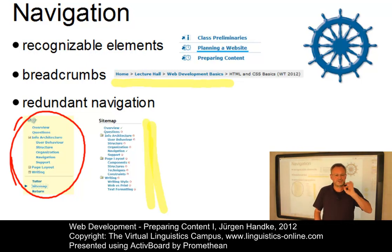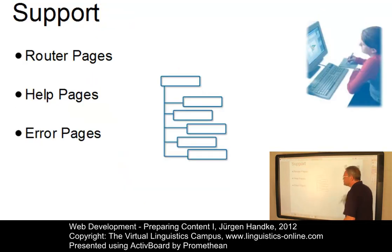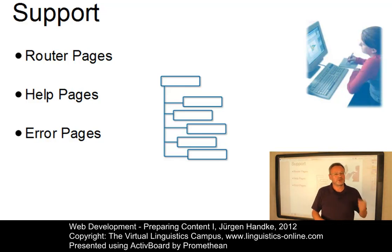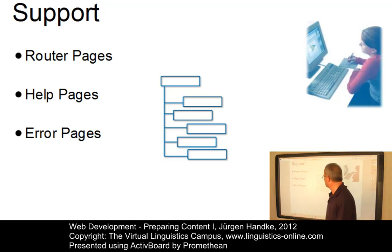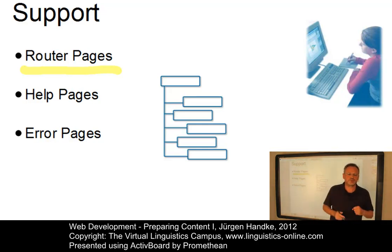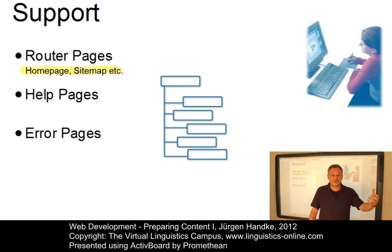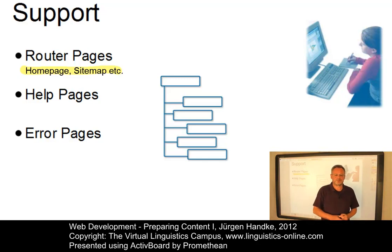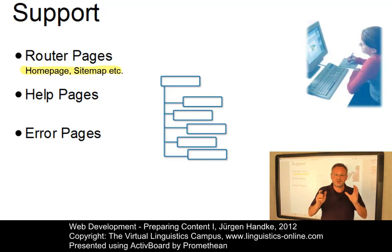After content organization and navigation, we have to think about support. Users might need support, and once they get lost on a website, frustration is likely to appear. To rescue users who got lost, three types of supporting pages can be introduced in the information architecture. First, we have so-called router pages, which should be reachable from the central pages. Examples include the home page, the site map, the table of contents, and special indices — lists of important terms. All these pages should ideally be reachable from anywhere.